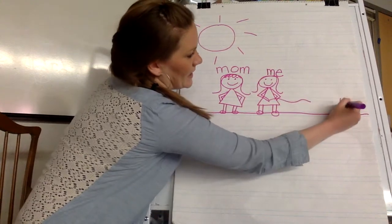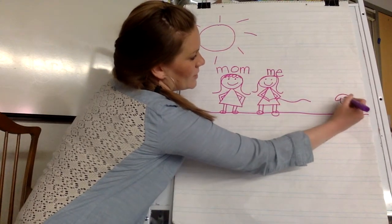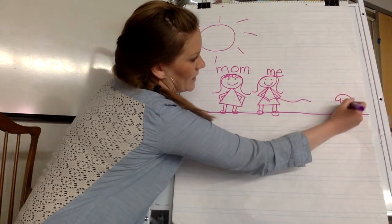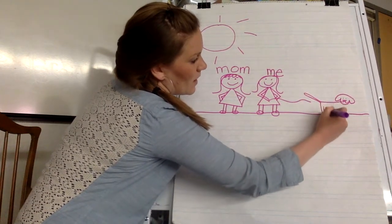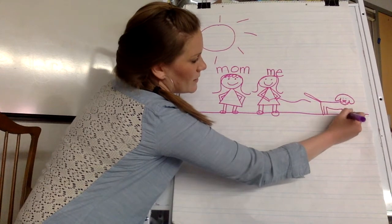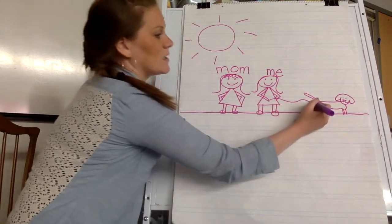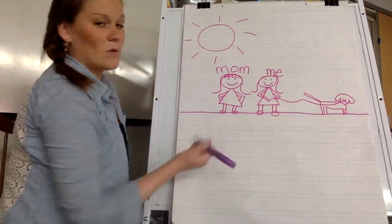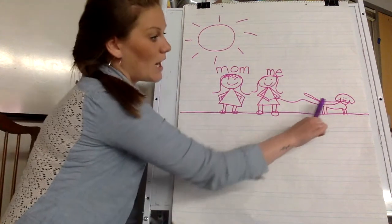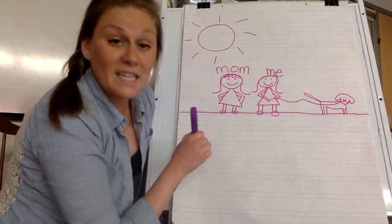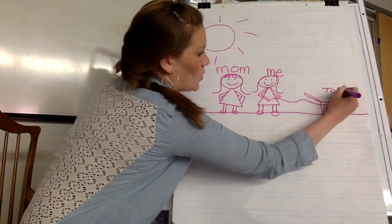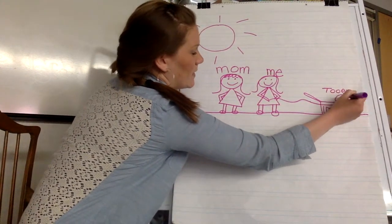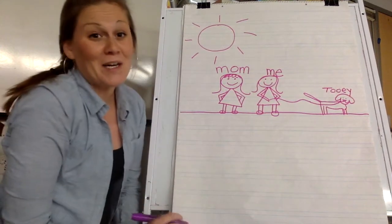So, we decided to take Tooey on a walk. It was a beautiful night. So, we took Tooey on a walk. That's another. Tooey is another character in my story. So, I must label him. Tooey. We took Tooey on a walk.